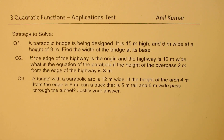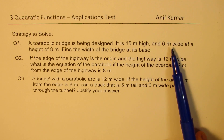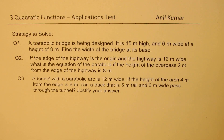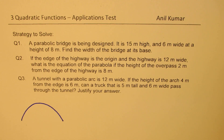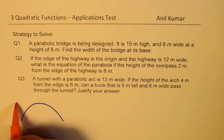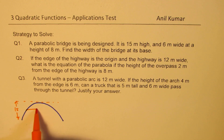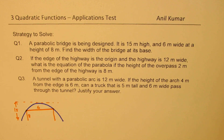The first question: a parabolic bridge is being designed. It is 15 meters high and 6 meters wide at a height of 8 meters. Find the width of the bridge at its base. The critical part here is that the parabolic bridge has a height of 15 meters. At a height of 8 meters, the width is 6 meters. That is question number one.